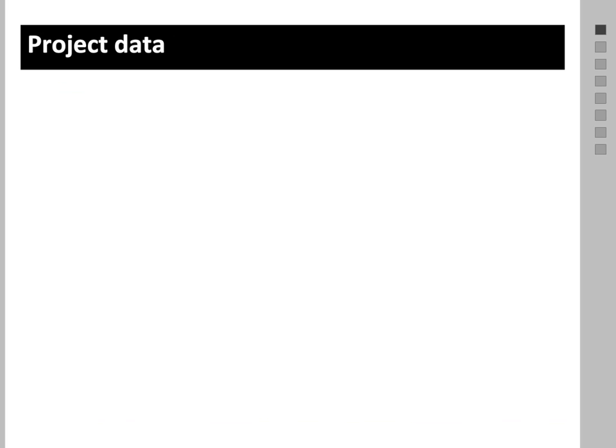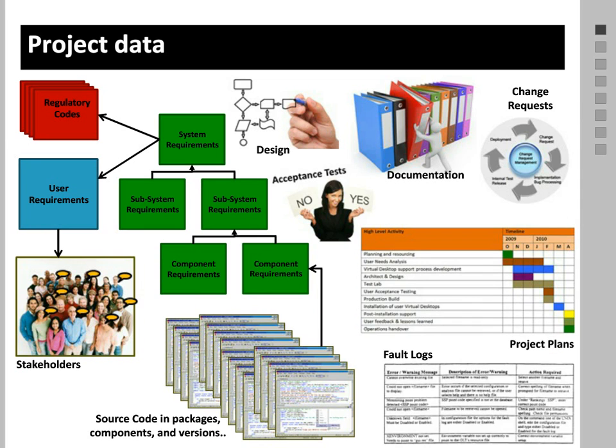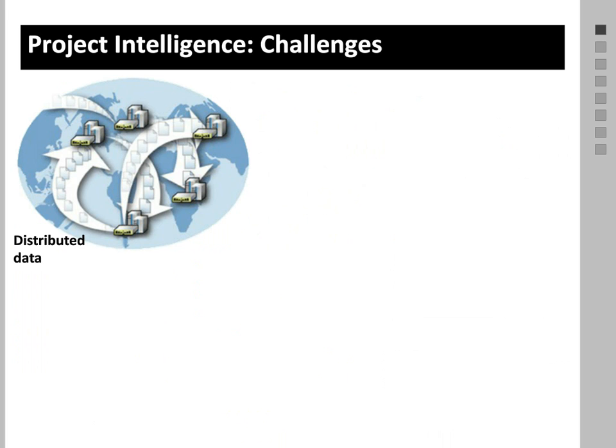Project data is made up of many different parts: regulatory codes, user requirements, stakeholders' requests, requirements from system level down to component and subsystem level, source code, documentation, change requests, project management and tracking information, and full blogs. The project data available to us is very diverse, and this is the data we would like to integrate into our project intelligence.